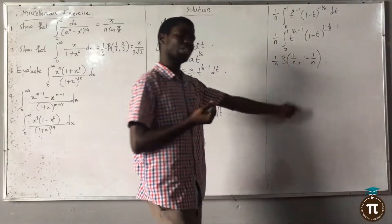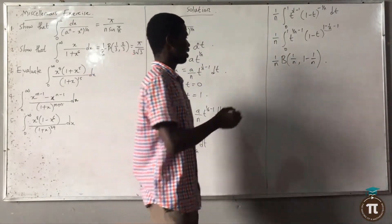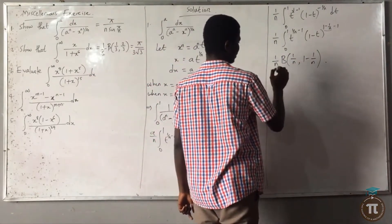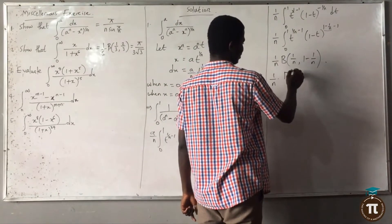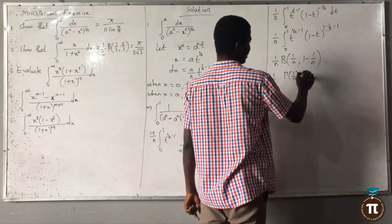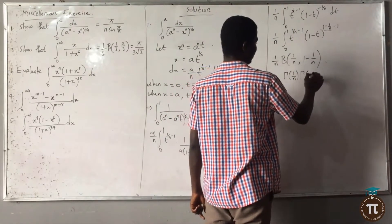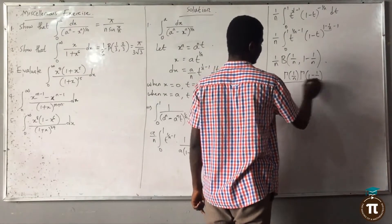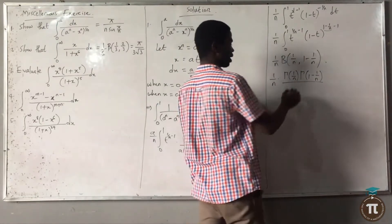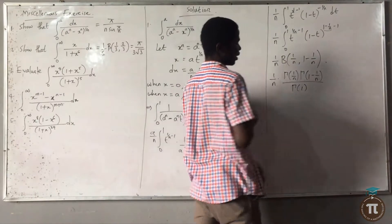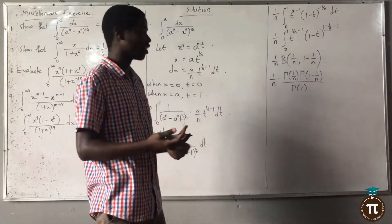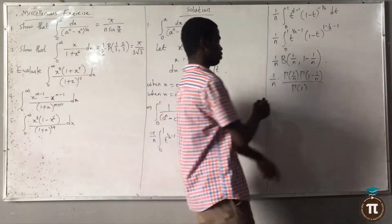Writing this properly: this is 1/n times gamma(1/n) times gamma(1 minus 1/n) over gamma(1). Adding the arguments together gives gamma(1), and gamma(1) equals 1.